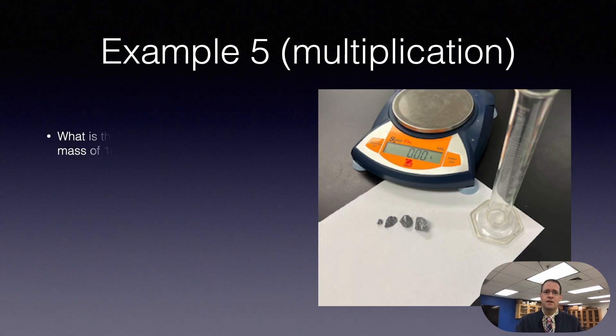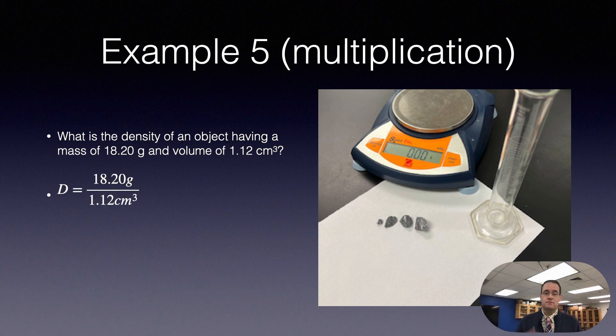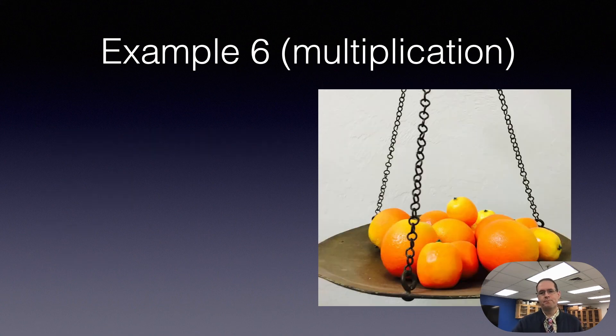Let's look at another example. This should be division on the slide here. Let's say we want to calculate density. We have the mass, we have the volume of the substance, and we want to calculate mass divided by volume. The 18.20 is 4 sig figs, the 1.12 is 3 sig figs. If we punch this onto our calculator, it gives you a result of 16.25, but we want to round it to 3 sig figs, which is the lower number. So here we want to write 16.3, and notice how the units are grams per cubic centimeter. We'll talk more about density in this class and on lab 2.